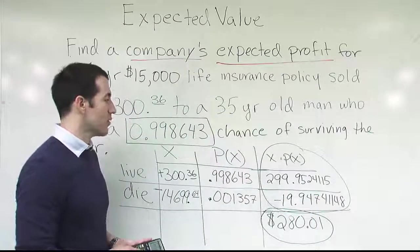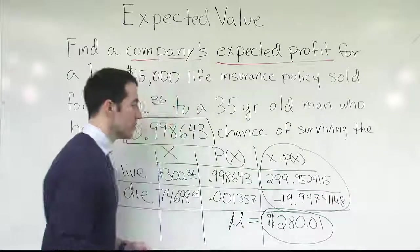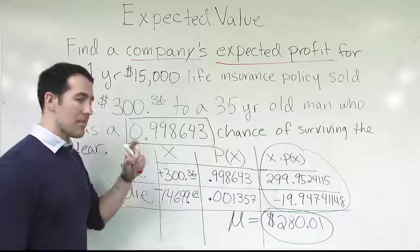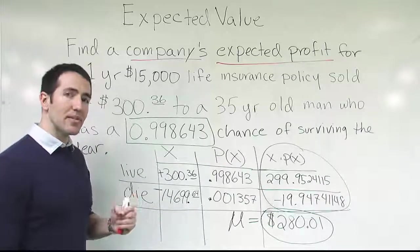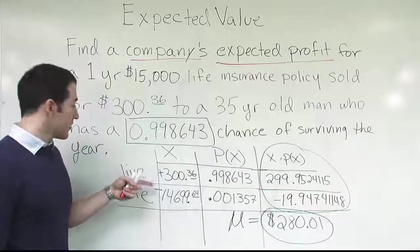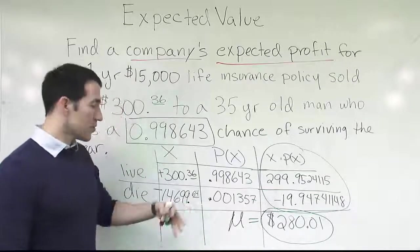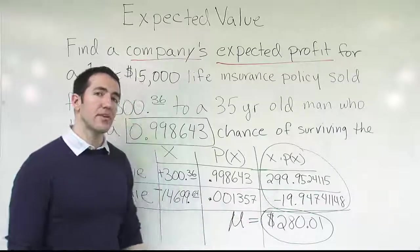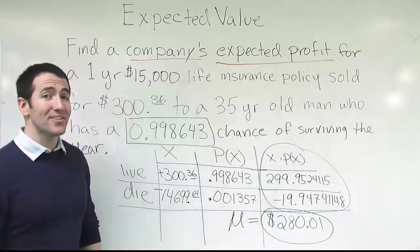Remember, this is your average, your expected value. What this means is that when they sell, say, 1,000 policies, by the end of the year when they look at how many times they paid out and how much money they collected in revenue, they divide that total by the number of policies sold and should come up with something close to $280. They'll never actually make exactly $280 — they'll either make $300 or lose $14,699.64 — but on average it works out to about $280 per policy. So for every 1,000 policies they sell, they'll bring in about $280,000. Not a bad business to be in.